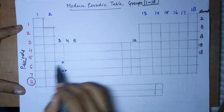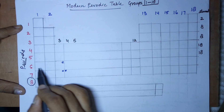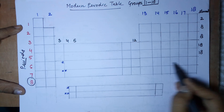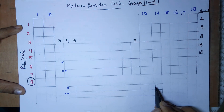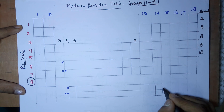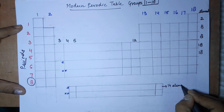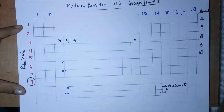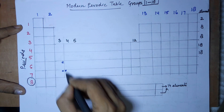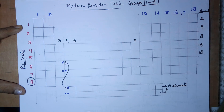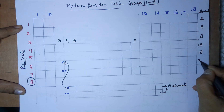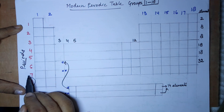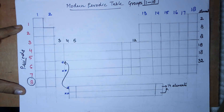Moving to the sixth period — have a close look. I've made a star here, which has significance. In the sixth period all 18 groups are filled, but the star refers to a horizontal row placed below the main table. That row contains 14 elements — the lanthanoids — so the sixth period has 18 plus 14, making a total capacity of 32 elements.